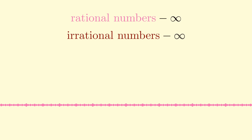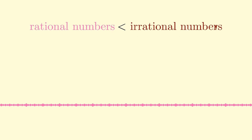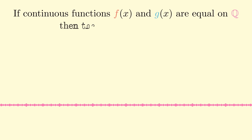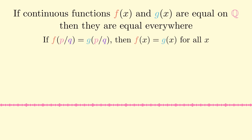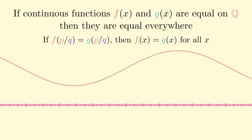What's very strange is that there are different sizes of infinity. In particular, there are more irrational numbers than there are rational numbers, even though both are infinite. This makes the next fact somewhat surprising: if you have two continuous functions f and g that are equal on the rational numbers, then they are equal everywhere. This means if f of p over q equals g of p over q for every rational number, then f of x equals g of x for every real number x. In this video, I want to cover a proof of this very fact.